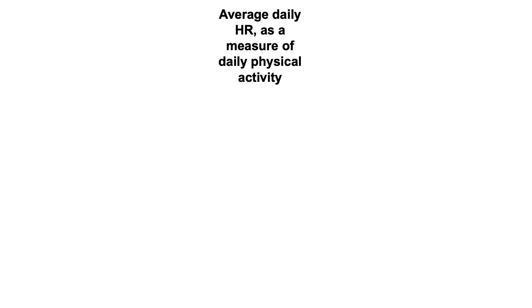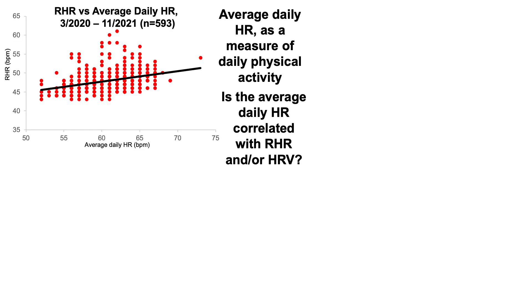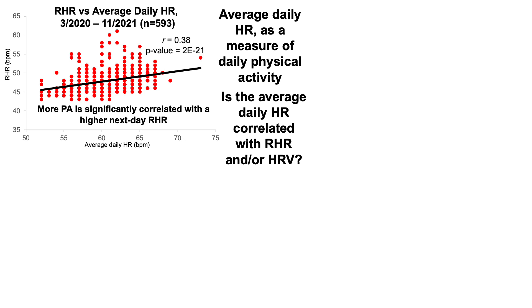In terms of a measure of daily physical activity, my fitness tracker gives me data not just for resting heart rate and heart rate variability, but also the average daily heart rate — the heart rate for the whole day, not just at rest while sleeping. Is the average daily heart rate significantly correlated with resting heart rate or heart rate variability? We can see the resting heart rate on the y-axis plotted against average daily heart rate on the x-axis. The more active I am on each day, that's significantly correlated with a higher next-day resting heart rate.